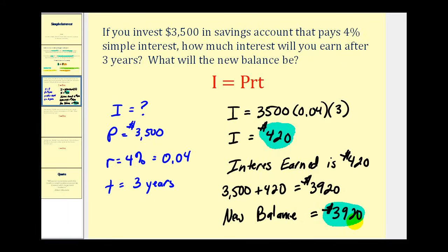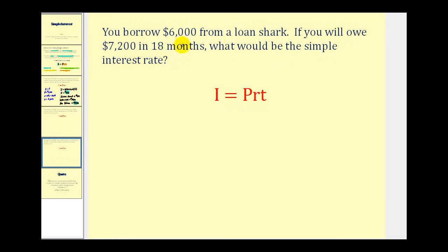Let's go and take a look at another example. You borrow $6,000 from a loan shark. If you will owe $7,200 in 18 months, what would be the simple interest rate? So now we're trying to find the interest rate, or R. So we should be able to determine I, P, and T. Let's see if we can do that.